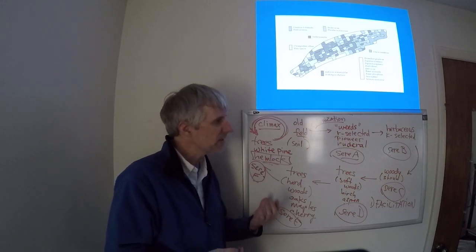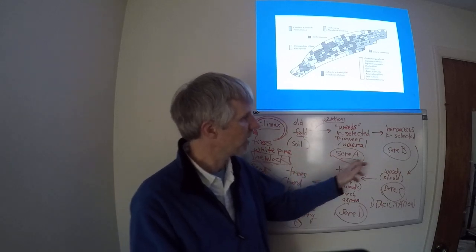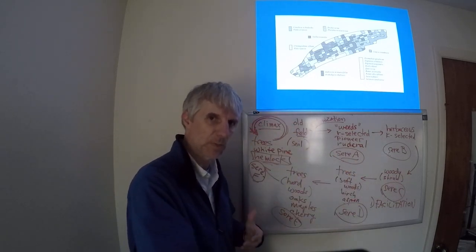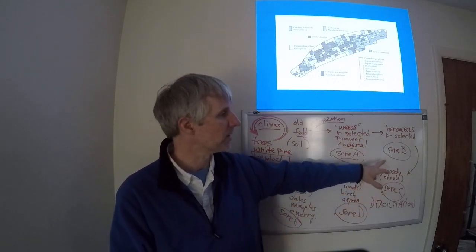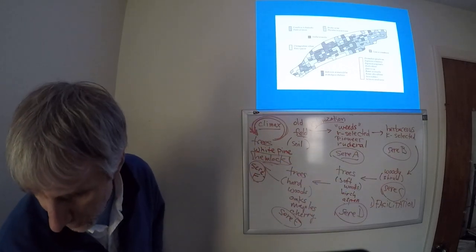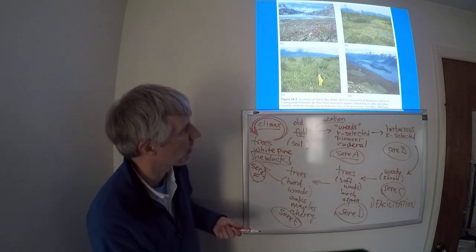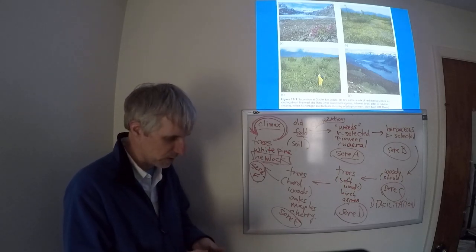Under the facilitated succession model, you need seres to promote the growth of subsequent seres. Each of these seres that exist are promoting the development of a subsequent sere. These species change the environment to promote their growth, and so on and so on, all the way through this model. This facilitated succession model is kind of the classic succession model that gets presented.